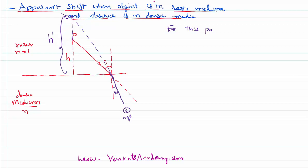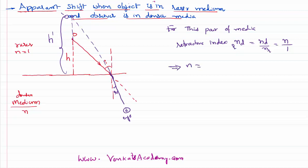For this pair of media, the refractive index of the denser medium with respect to the rarer medium — that is denser divided by rarer — since the rarer medium is vacuum with index 1, we can write n equals apparent height h dash divided by real height h. This is clear because the apparent height is more than the real height.